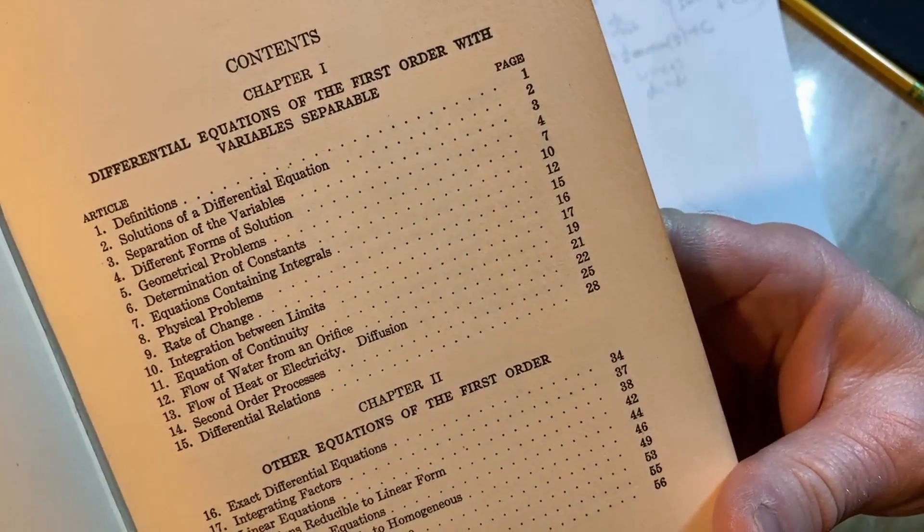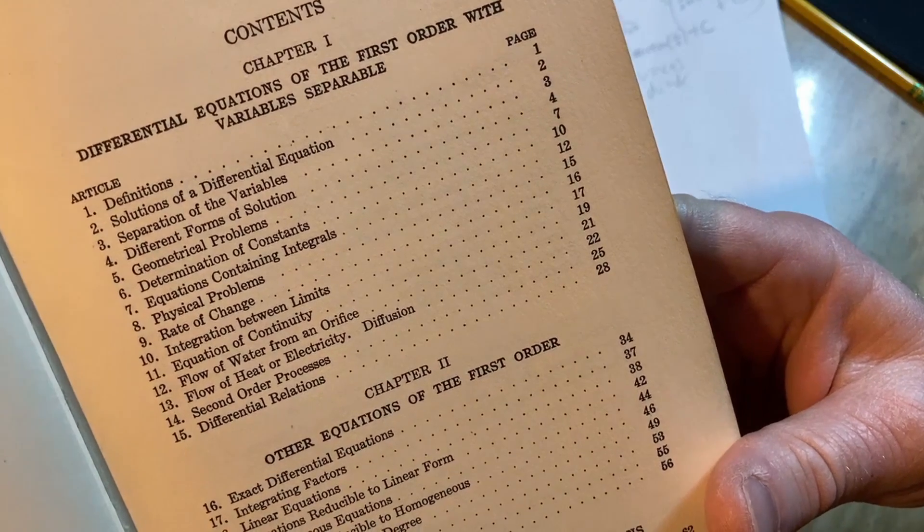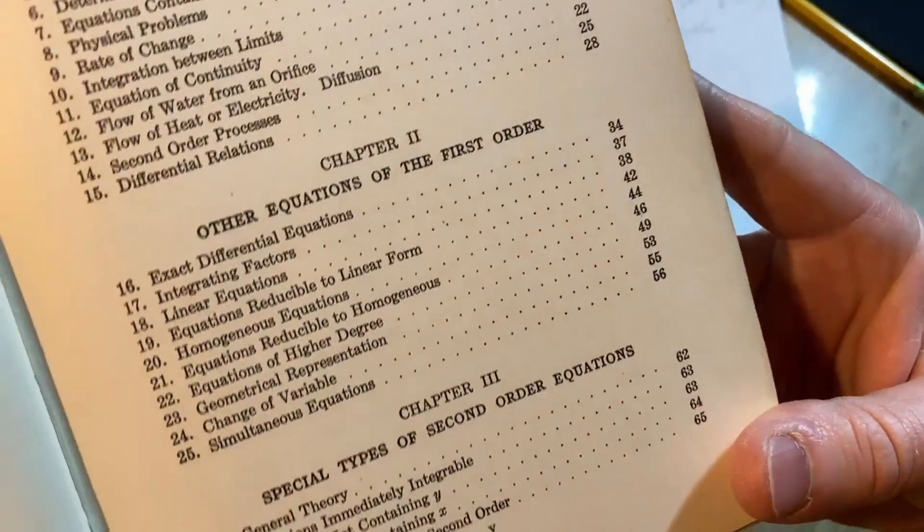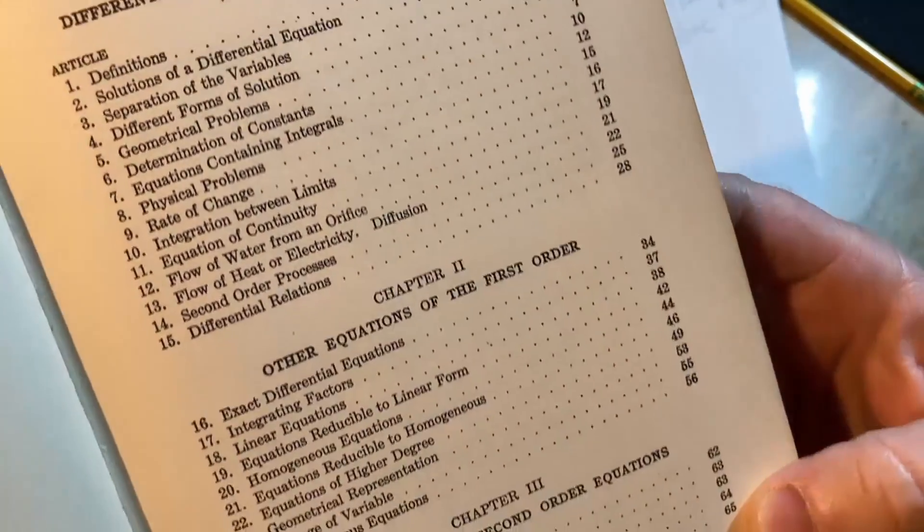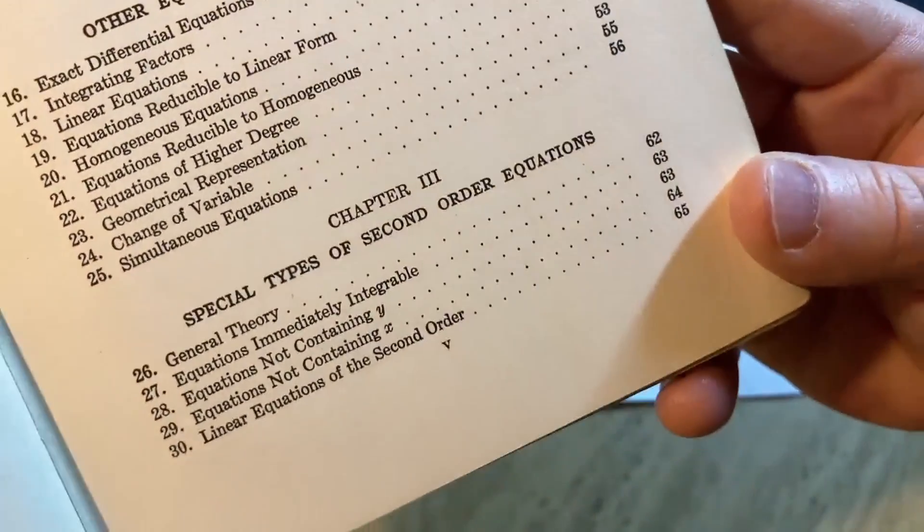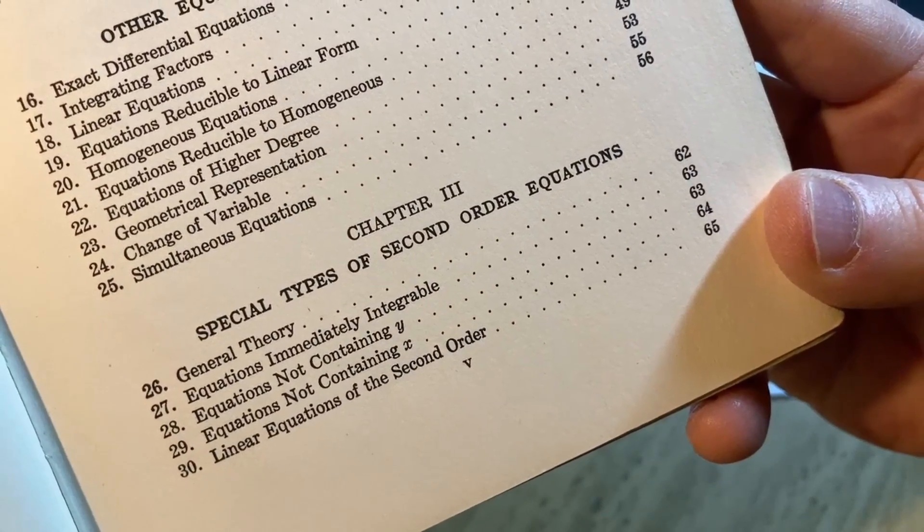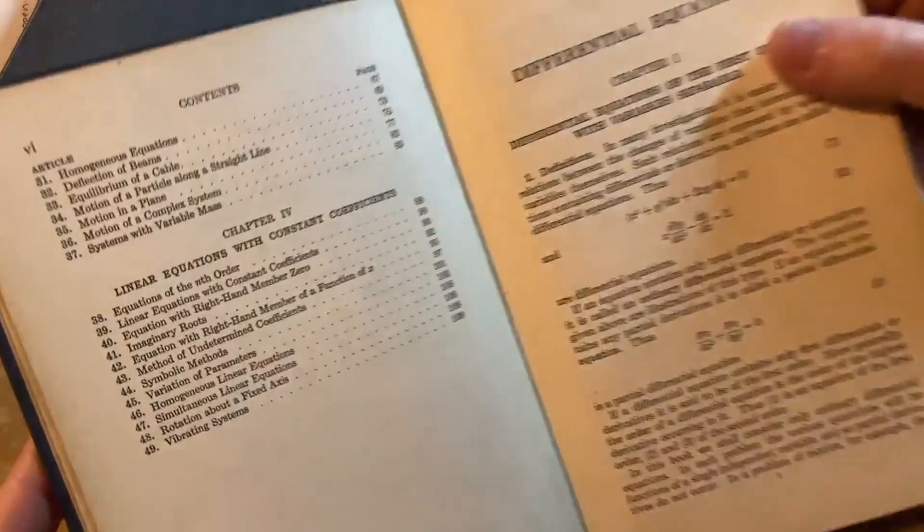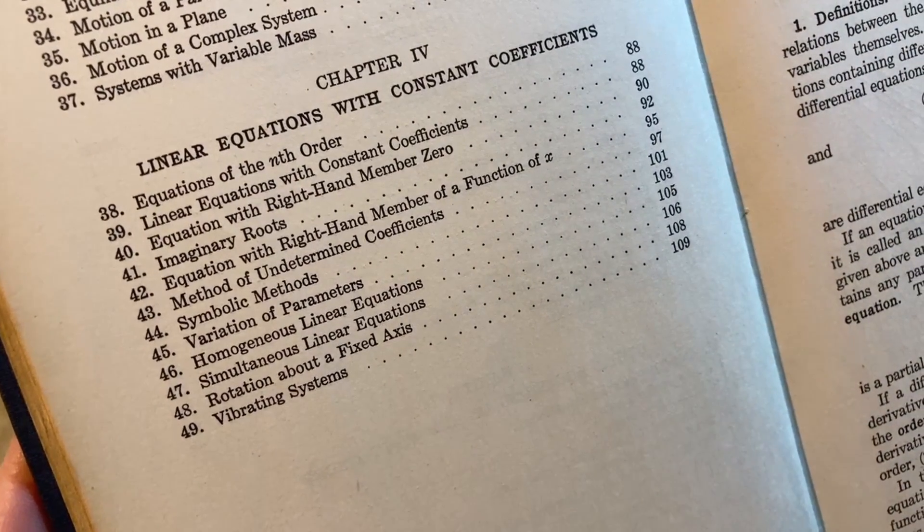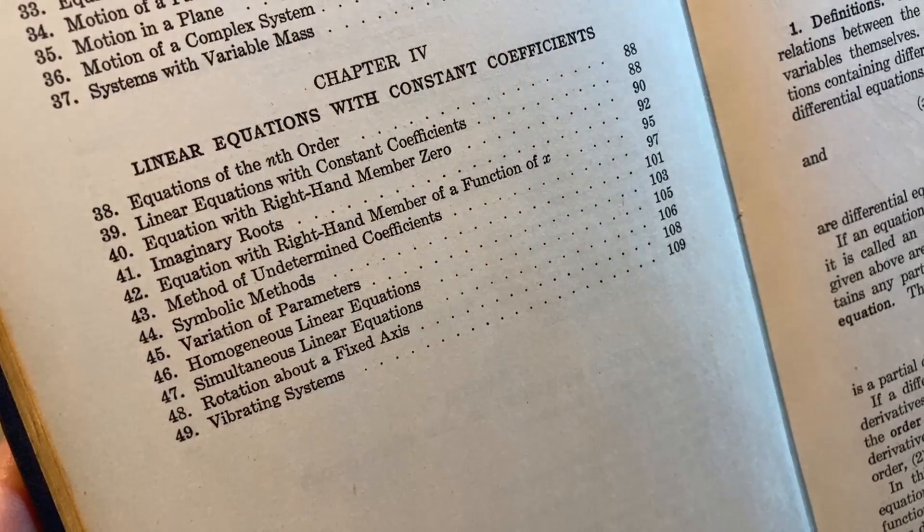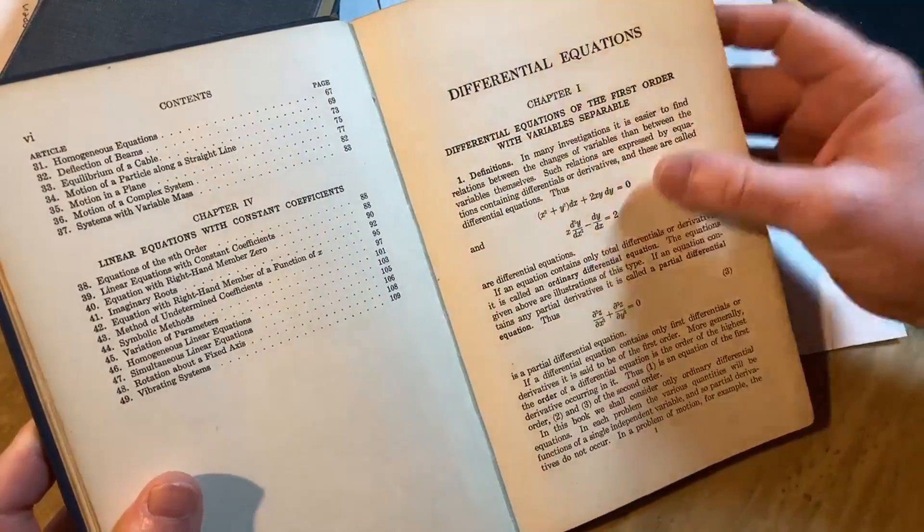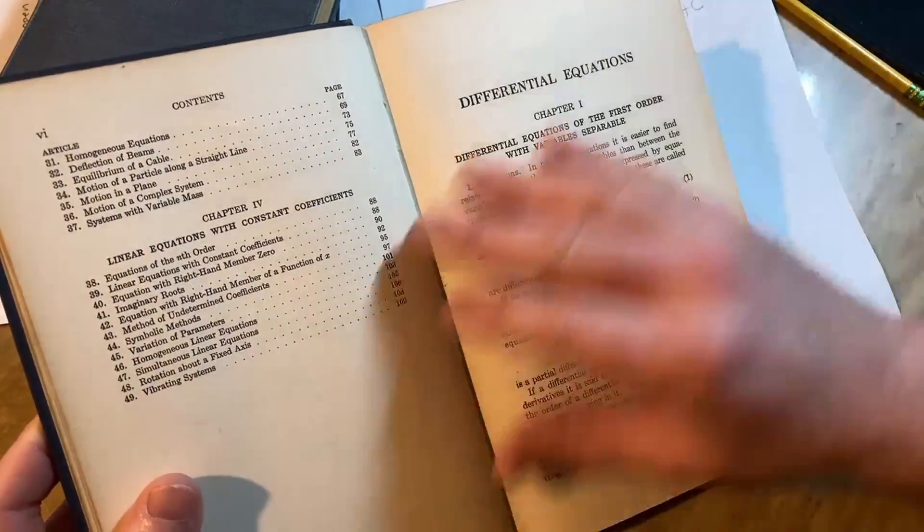Copyright 1922, 1925, 1934. This is the 12th printing. I mean this survived a long time. H.B. Phillips, MIT math boss. This is cool. Of course, with differential equations of the first order with variables separable. Look at all those topics. Interesting. Flow of water from an orifice. Wow, that's not something you see. I've never seen a section titled that, like whoa, what is that? Interesting. Equations of higher degree, range of variables, simultaneous equations. We've got general theory, special second order equations. Let's turn the page. Homogeneous equations, deflection of beams.